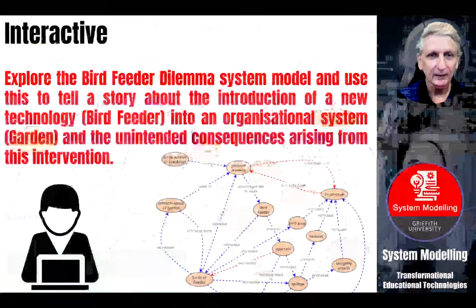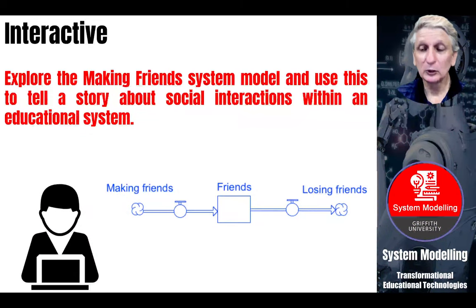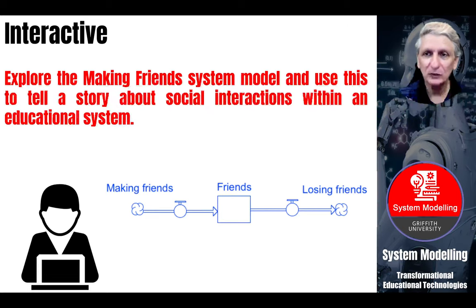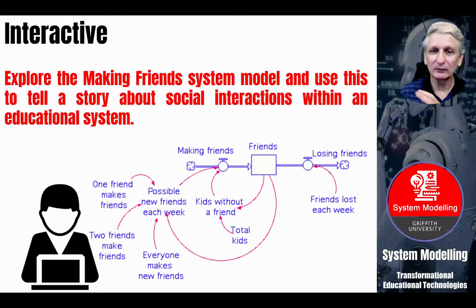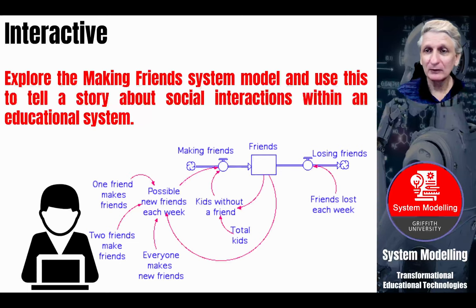Another example used with young children is teaching them about making friends and learning how to make friends — and the fact that we make friends and we lose friends, which is just a natural part of life. But there are things we can understand about friendship by looking at systems models. We can build more complex models about making friends: there's a total number of children around that we can make friends from, some already have friends, some will be looking for friends, and having more friends means you're more likely to make more friends.